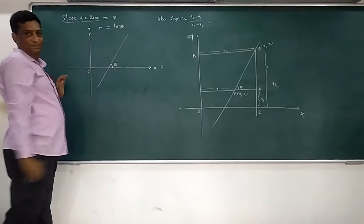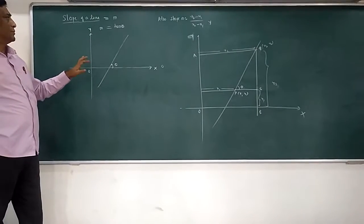In short, then slope is given by tan theta. That gives you slope of a line.